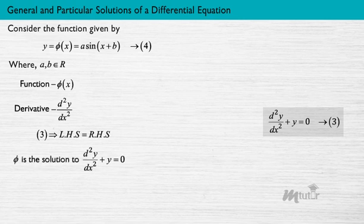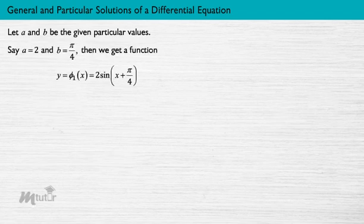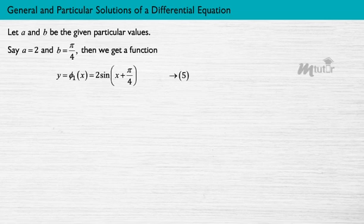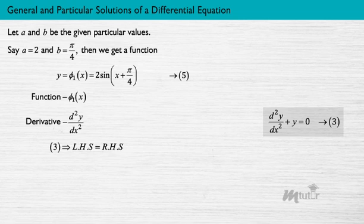Thus, it is a solution to differential equation 3. Let A and B be given particular values — say A = 2 and B = π/4 — then we get a function as shown on the screen, name it equation 5. When this function and its derivative are substituted in equation 3, again the left-hand side becomes equal to the right-hand side. Therefore, φ₁ is also a solution for equation 3.